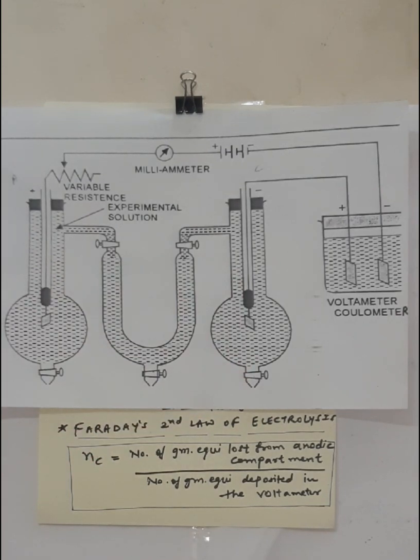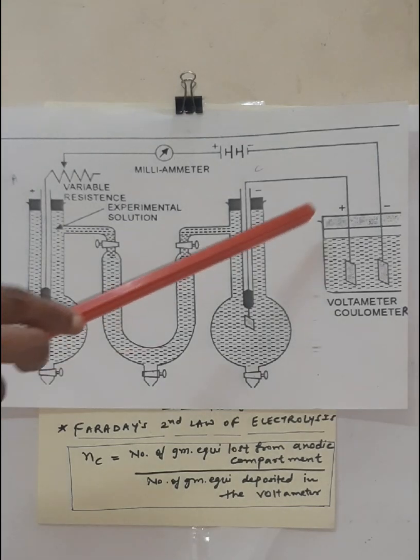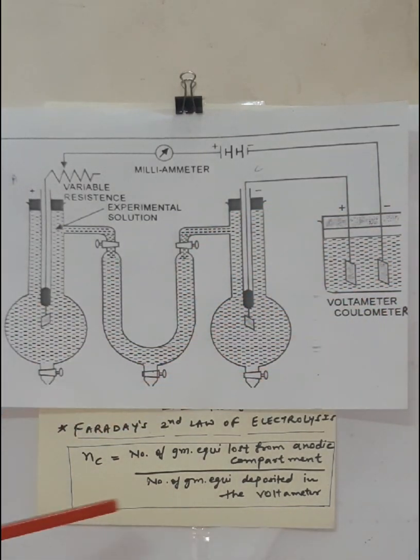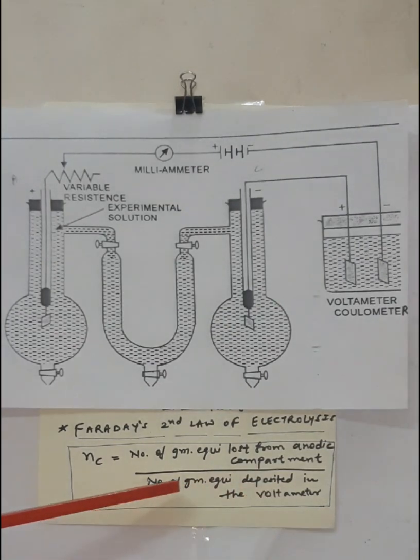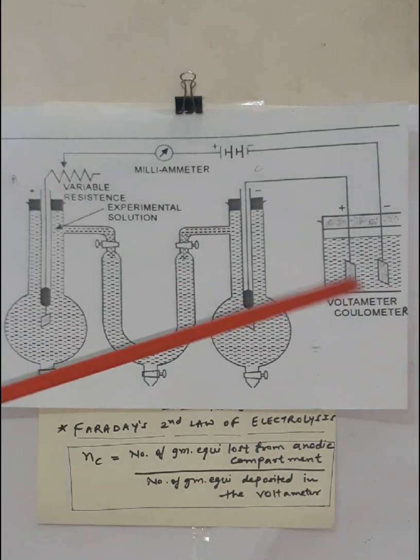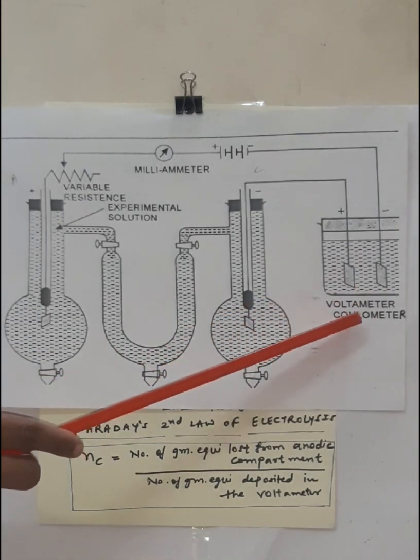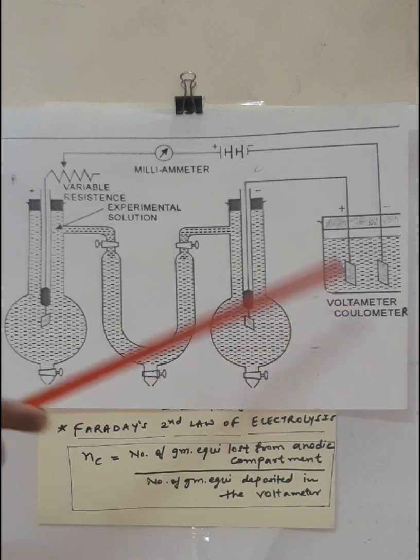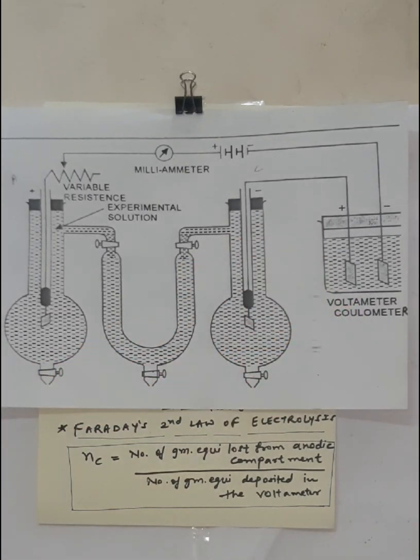The apparatus is now filled with the solution of the electrolyte whose ions' transport number you have to determine. You will fill the apparatus completely with that electrolytic solution. Further, a silver or copper voltameter is placed in series with this apparatus to find out the number of gram equivalent deposited within this voltameter. You can see here voltameter is also referred to as coulometer. This is the other name for voltameter commonly used which is known as coulometer.